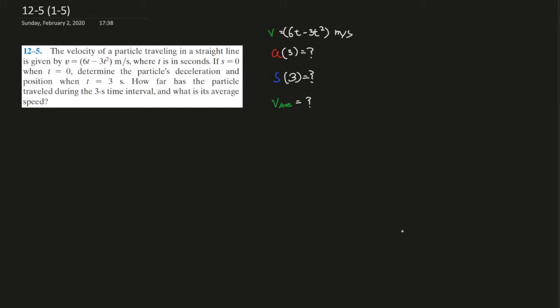Velocity equals 6t minus t squared meters per second, where t is in seconds. If s equals zero when t is zero, determine the particle's deceleration and position when t equals three seconds, how far has the particle traveled during the three seconds time interval, and what is its average speed.